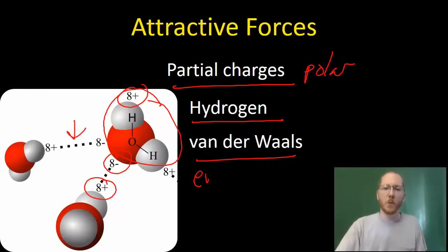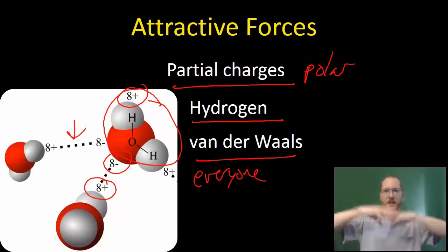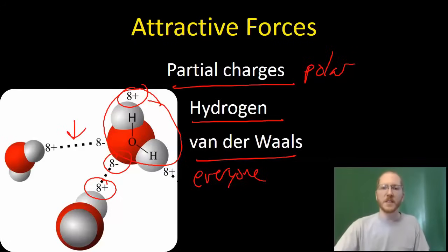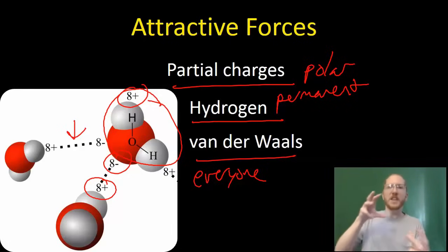With van der Waals forces, these occur for everyone. This is where you ultimately have that a molecule has its electrons constantly moving, and sometimes those electrons happen to be mostly on one side of the molecule. So that side of the molecule becomes slightly negative just for a moment, a fraction of a second, and the other side becomes slightly positive. So that can then get these temporary attractive forces between the different molecules. But these are temporary. When you talk about hydrogen bonds, when you talk about these polar molecules, this is something that's fairly permanent. The bonds themselves, these attractive forces, the hydrogen bonds, the dipole-dipole interactions, they can form and break, but that charge, that partial charge that's present, sticks around. Whereas with van der Waals, these are a temporary partial charge. So these are very, very temporary attractions.